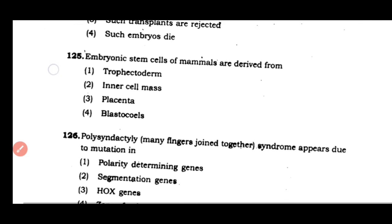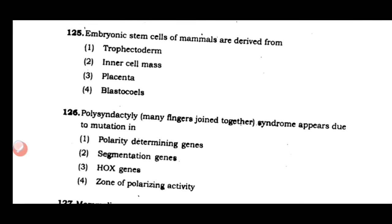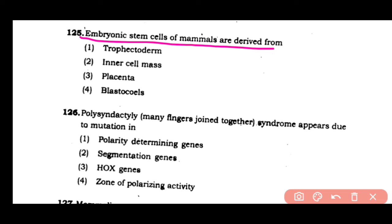Question number 125: Embryonic stem cells of mammals are derived from — (1) trophectoderm, (2) inner cell mass, (3) placenta, (4) blastocoele. The correct answer is option 2.